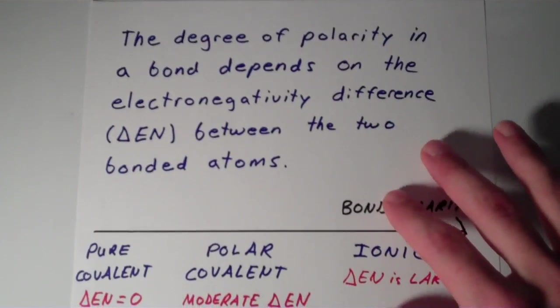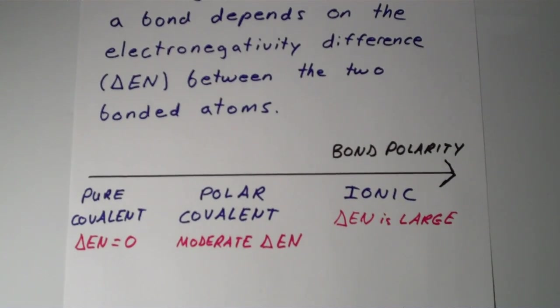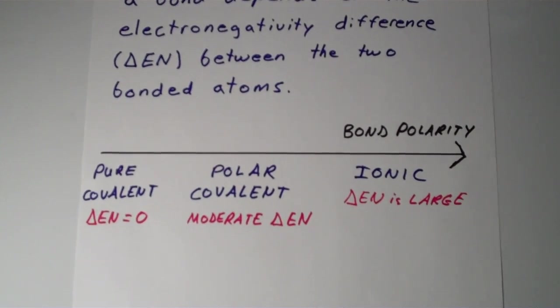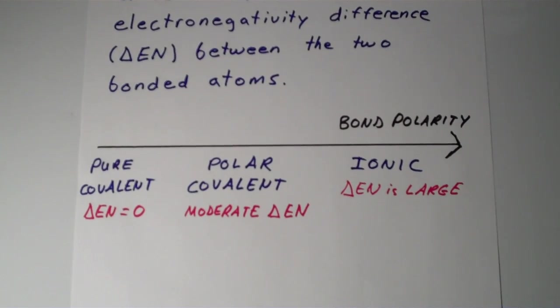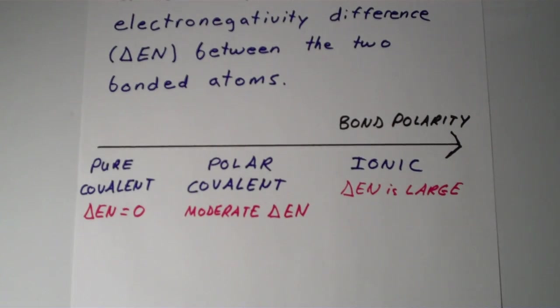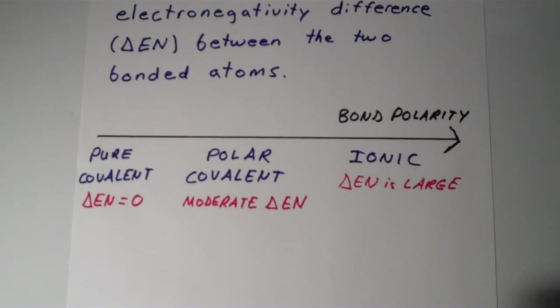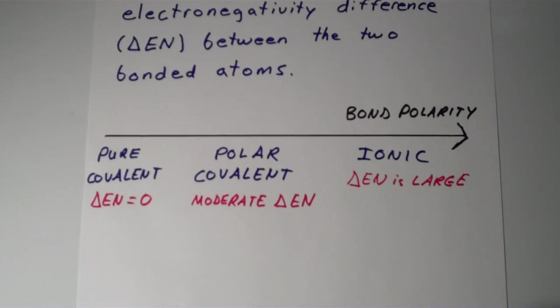Basically, what's going on is we have this continuum of bond polarity. Within this continuum, we have three broadly classified groups that we call pure covalent, polar covalent, and ionic. In a pure covalent bond, the two atoms that are bonded together are identical. A bond between a hydrogen and another hydrogen, that would be a pure covalent bond. There's no difference in electronegativity because they are virtually identical atoms. Same thing with O2, N2, F2, Cl2, and the like.